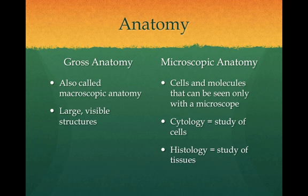Anatomy can be described as gross anatomy or microscopic anatomy. Gross anatomy, also known as macroscopic anatomy, looks at large visible structures of the body that can be seen with the naked eye. Microscopic anatomy looks at cells and molecules that can only be seen with a microscope. Studies using microscopic anatomy include cytology, which is the name given for the study of cells, and histology, which is the name given for the study of tissues.